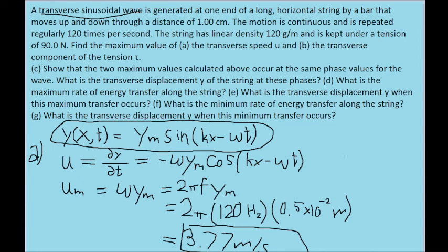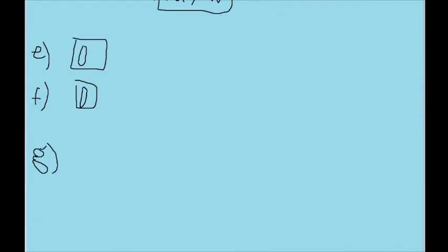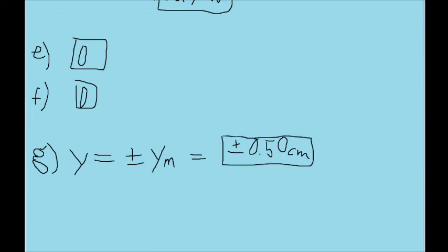Part G asks for the y displacement when minimum power occurs. We established that maximum power happens when the sine function equals zero, so the opposite — minimum power — happens when the sine function equals positive one or negative one. This makes the function equal to either positive or negative y_sub_m. Plugging in the amplitude, the answer is plus or minus 0.50 centimeters.